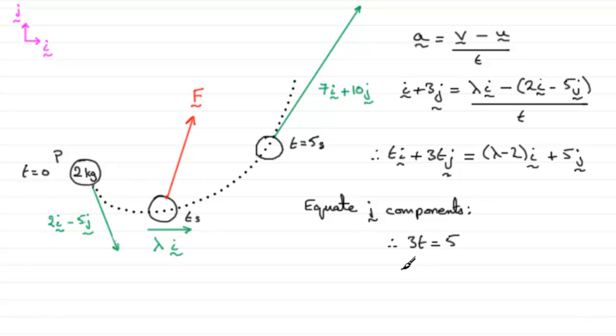And to work out t, all we need to do is divide both sides by 3. So you get t equals 5 thirds seconds. So that gives us our value of t.